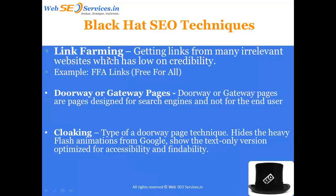The next technique is doorway or gateway pages. Doorway or gateway pages are pages designed specifically for search engines and not for end users. Cloaking is one of the best examples of doorway pages. What they do is hide all the JavaScript, Flash, images, or videos — because search engines are not friendly with images, videos, or Flash.